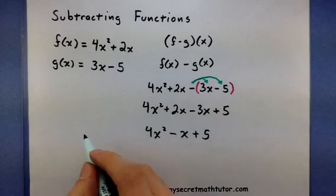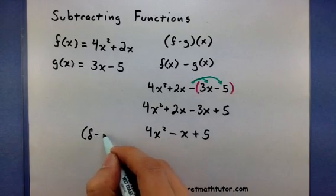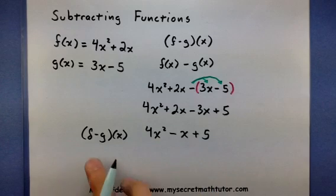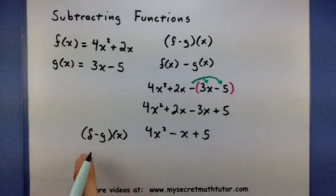I'll have 4x squared minus x plus 5. This expression now represents my new function where I have f minus g.